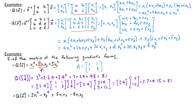Let's look at one last example. Suppose we have the quadratic form q equals 2x1 squared minus x3 squared plus 5x1x2 minus 8x1x3. The matrix of the quadratic form will be 3 by 3. The diagonal entries correspond to coefficients of x1 squared, x2 squared, and x3 squared. The coefficient of x1 squared is 2, so the first diagonal entry is 2. There is no x2 squared term, so the second diagonal entry is 0. The coefficient of x3 squared is negative 1, so the third diagonal entry is negative 1.